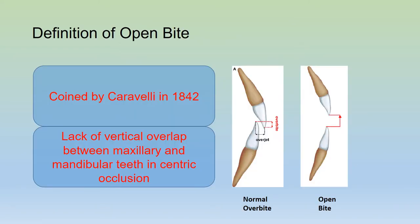What is meant by open bite malocclusion? This term was coined by Carabelli in 1842. Normally the upper incisors overlap vertically the lower incisors. When there is a lack of vertical overlap between the upper and lower incisors in centric occlusion, the condition is termed as open bite.